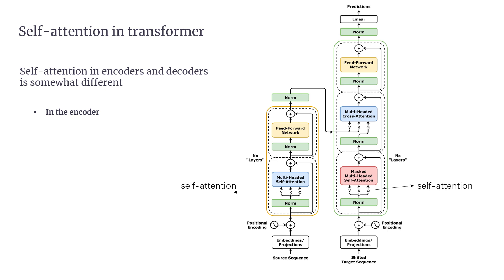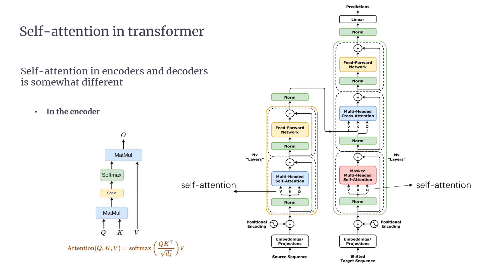For input, each token starts as a vector representing its meaning, and these embeddings are combined with positional encodings to help the model understand token order. For each token, the model generates three vectors — query, key, and value. It calculates attention scores by taking the dot product of the query and key, followed by scaling and a softmax operation to get the final attention weights. These weights create a weighted sum of the value vectors, with more attention paid to more relevant tokens. The output is a set of contextualized representations for each token, enriched with information from the entire sequence, passed to the next encoder layer.